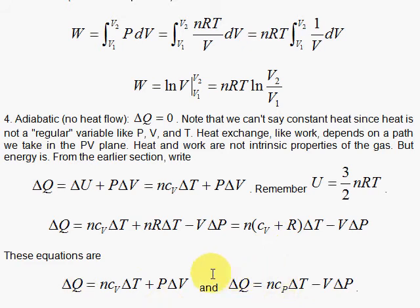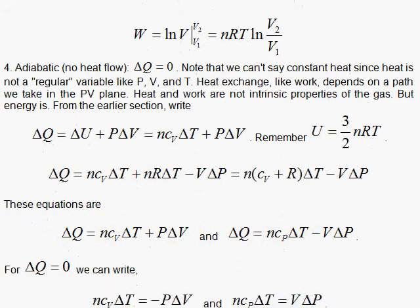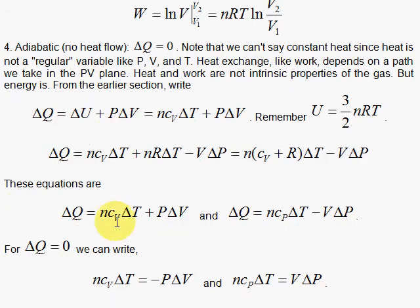We're trying to get a handle on what this mysterious adiabatic process means. Delta Q equals zero—what does that mean? I need to flush out these regular variables and see what's going on. So I will set delta Q to be zero.